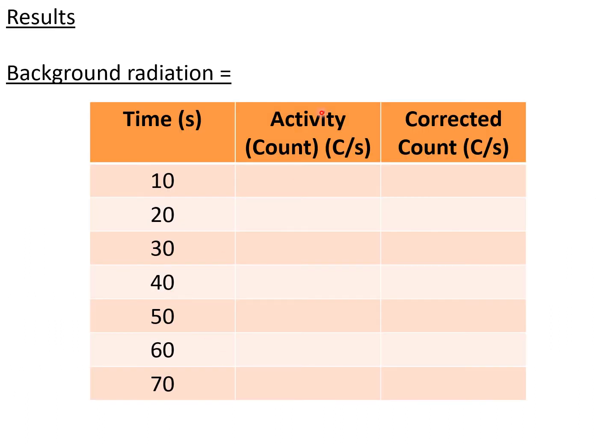You write your results down where you've got your activity which is in counts per second, and you've got the corrected count. Remember we measured the background radiation first, so to get the corrected count we subtract the background from each of these activity counts. We're taking readings every 10 seconds and the experiment is going to last for about five minutes or so.